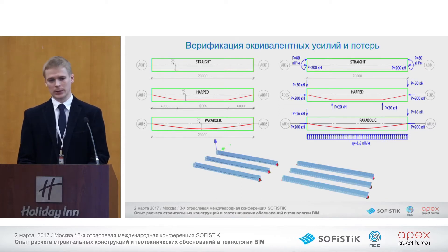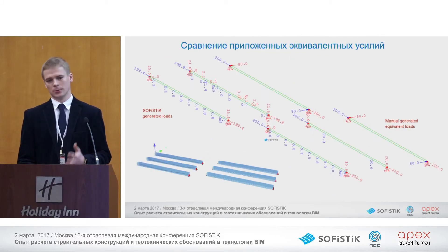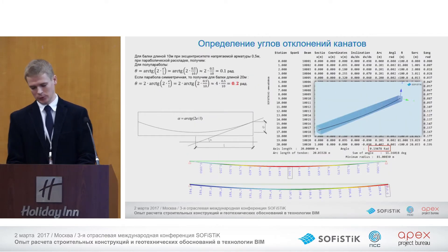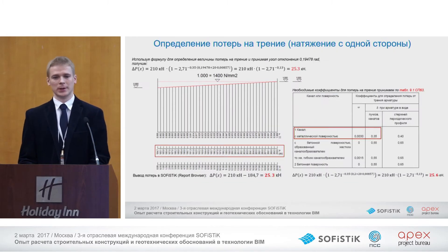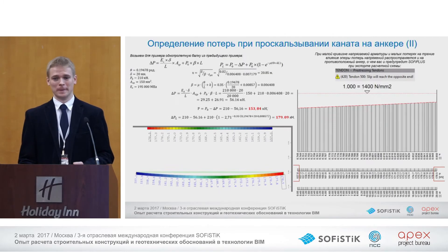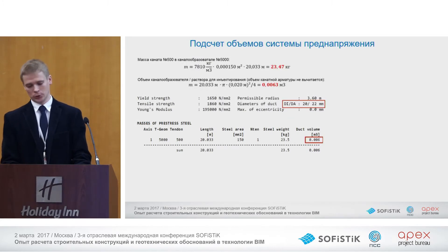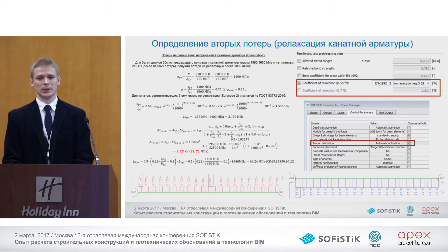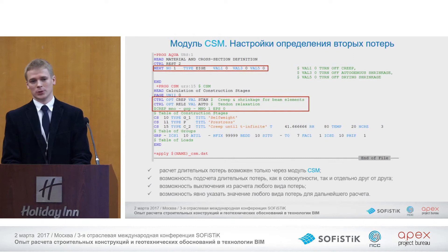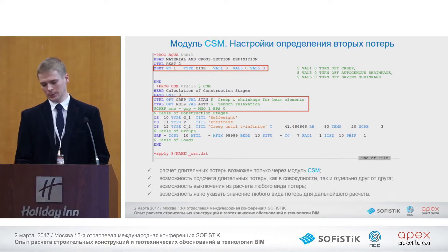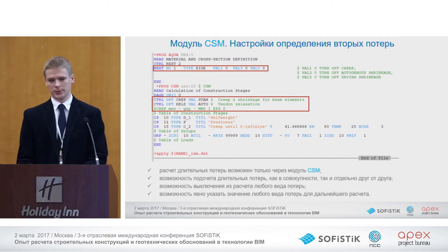We verify the results using very simple examples for ropes in SOFISTIK and manual calculation on the right-hand side, and the results are highly accurate. You can use various options for calculating different parameters, defining the elongation of wire ropes and volume using the geometrical area, as well as relaxation of reinforcement, shrinkage, and grip — everything can be taken into account.